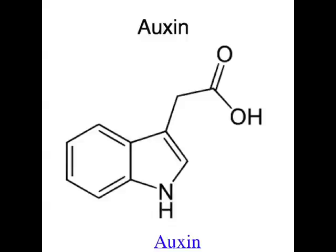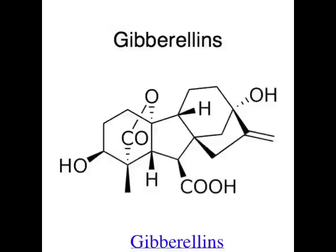Auxins are also responsible for apical dominance — when one stem grows bigger and stronger and is dominant over the rest in a plant. Auxin restricts lateral growth of the plant in favour of one stronger, bigger stem, which basically ends up being the trunk of the plant. The second group of plant hormones is gibberellins, and they promote cell elongation and the growth of the entire plant. They're also responsible for seed germination, flowering, and fruit enlargement.